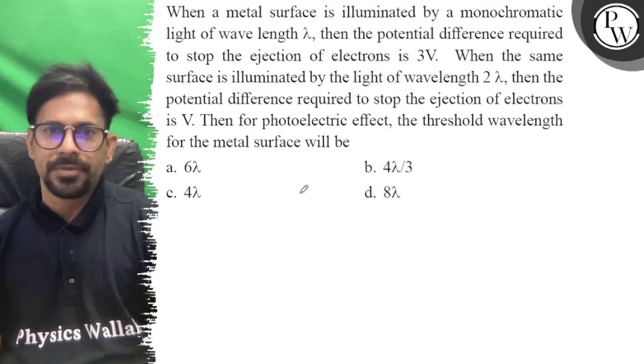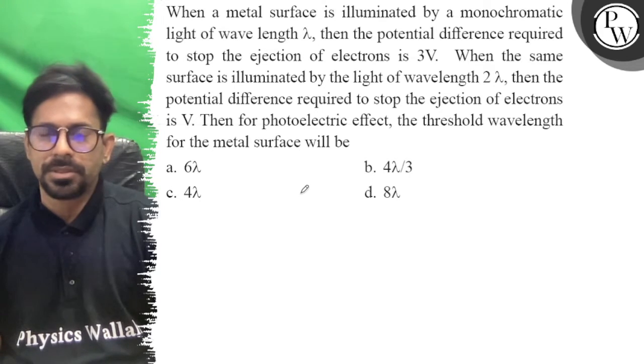Hello everyone, let's see the question. When a metal surface is illuminated by a monochromatic light of wavelength lambda, then the potential difference required to stop the ejection of electrons is 3V.